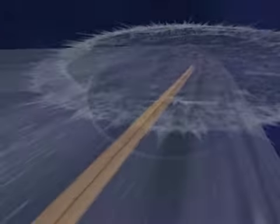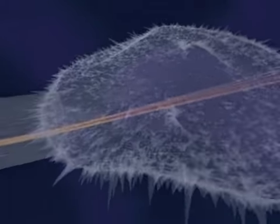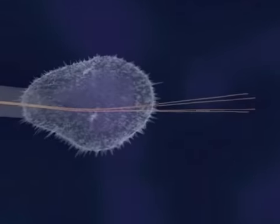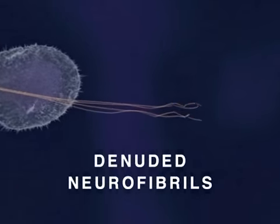Ultimately, both the developing neurite and its growth cone collapse, and some denuded neurofibrils form aggregates or tangles, as depicted here.